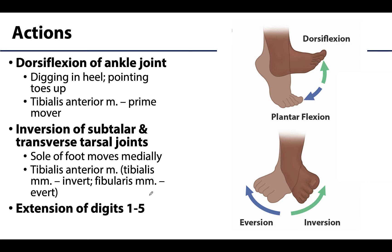These muscles in the anterior compartment will affect joints in the ankle as well as the foot, with the primary action — in which all muscles in this compartment play some role — being dorsiflexion of the ankle joint. I always think of dorsiflexion as digging your heels into the ground and then pointing the toes up or elevating the forefoot. While all of these muscles play a role in dorsiflexion, it is the tibialis anterior that has the most mechanical advantage, making it the strongest or primary mover.